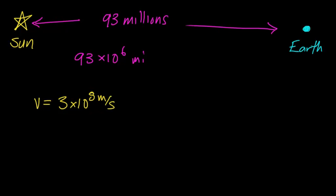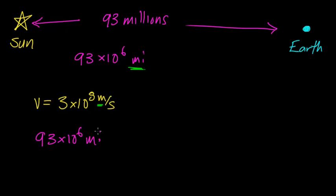What we need to do first is make sure that our units of distance are consistent. Notice that we're recording the velocity of light in units of meters per second, and the distance between the earth and the sun in units of miles. So what we should do first is convert miles to an SI unit — meters. To do that, we're going to take 93 times 10 to the sixth miles and convert that over to units of meters.